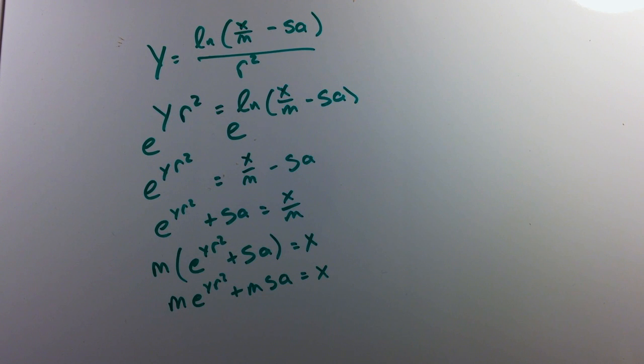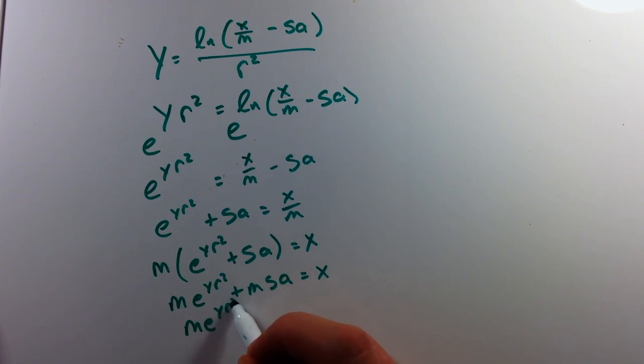We have to subtract m s a from both sides, and we're left with m e to the y r squared equals x subtracted by m s a.